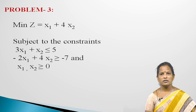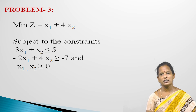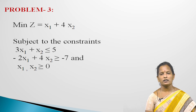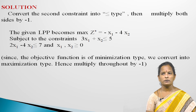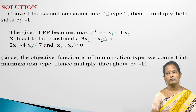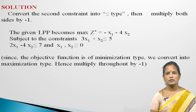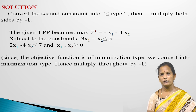Problem 3: Minimize Z equal to x1 plus 4x2, subject to: 3x1 plus x2 less than or equal to 5; 2x1 plus 4x2 greater than or equal to minus 7; x1, x2 greater than or equal to 0. Solution: Convert the second constraint into less than or equal to type by multiplying both sides by minus 1. Since the objective function is of minimization type, convert to maximization by multiplying throughout by minus 1. The canonical form becomes: maximize Z* equal to minus x1 minus 4x2, subject to: 3x1 plus x2 less than or equal to 5; minus 2x1 minus 4x2 less than or equal to 7; x1, x2 greater than or equal to 0.